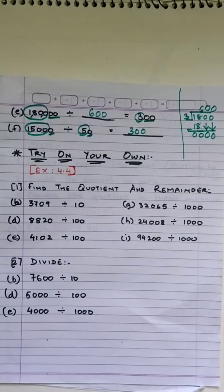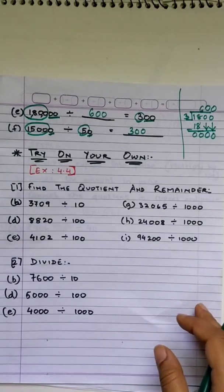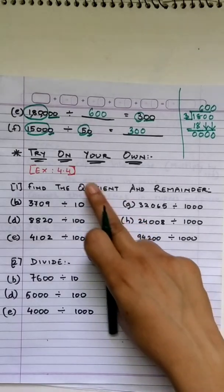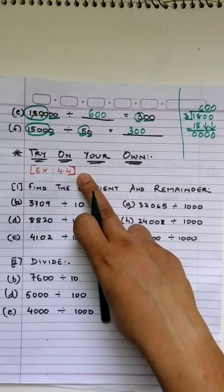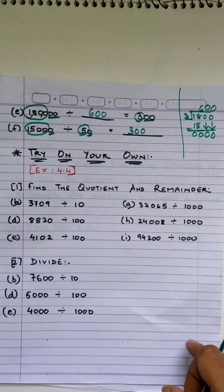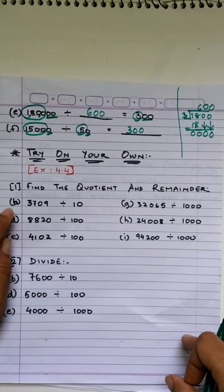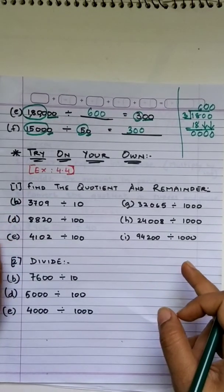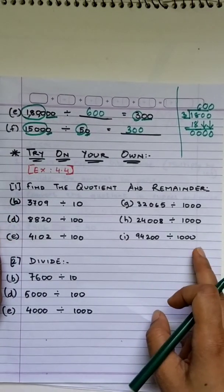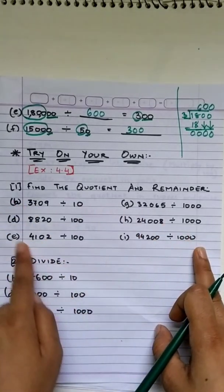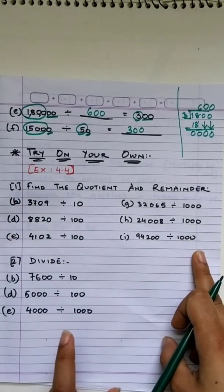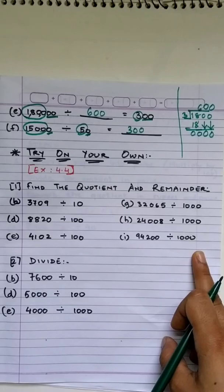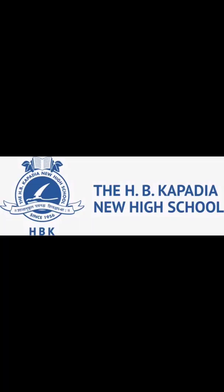Now it's time to try the remaining sums of exercise 4.4 on your own. We solved some A, some C, and some F of the first heading — now you solve the remaining. All the best. Thank you.